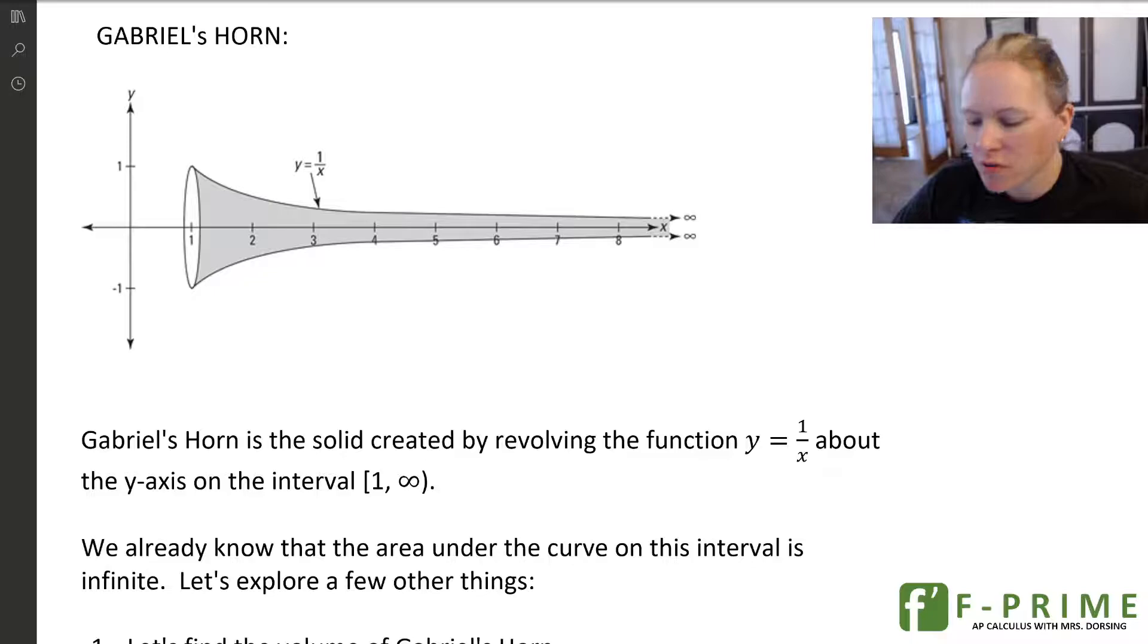Hi everyone, and welcome back to another AP Calculus video. In this video, we're going to talk about a special circumstance or a special type of curve that creates, when you revolve it around the x-axis, this shape that mathematicians refer to as Gabriel's horn.